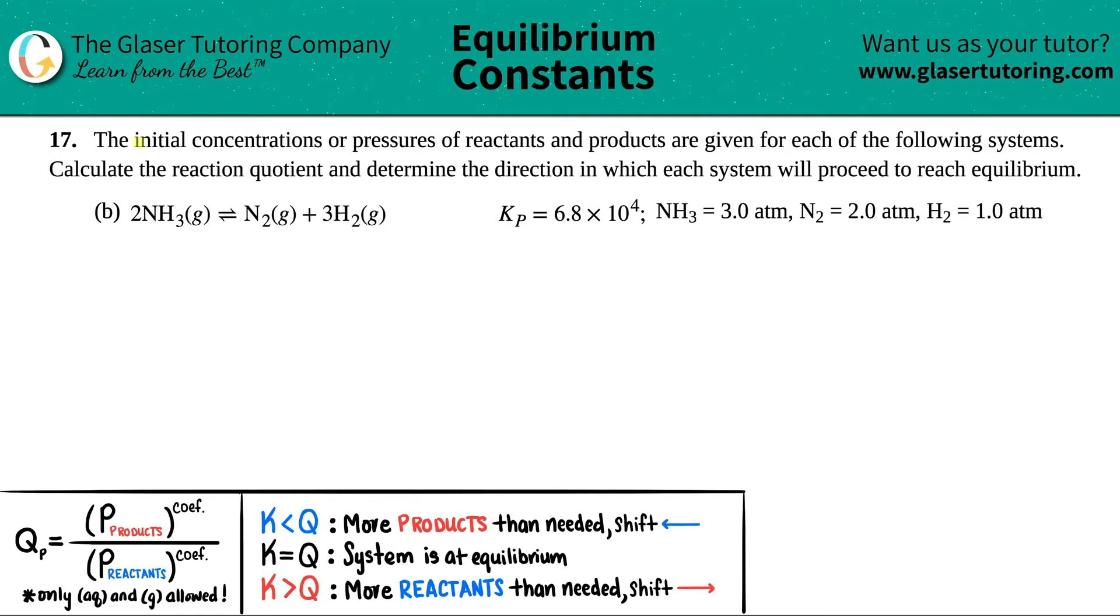Number 17. The initial concentrations or pressures of reactants and products are given for each of the following systems. Calculate the reaction quotient and determine the direction in which each system will proceed to reach equilibrium. We have letter b, so we need to find out what's going on with this reaction.